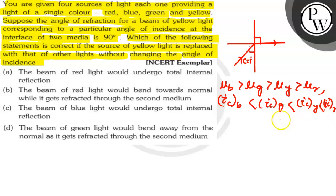As sin Ic equals 1 by µ where Ic is the critical angle. Since Ic B is less than Ic Y, the beam of blue light would undergo total internal reflection.